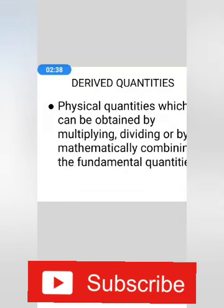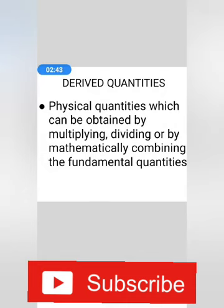Another kind of physical quantities is derived quantities. Physical quantities which can be obtained by multiplying, dividing, or by mathematically combining the fundamental quantities are derived quantities.